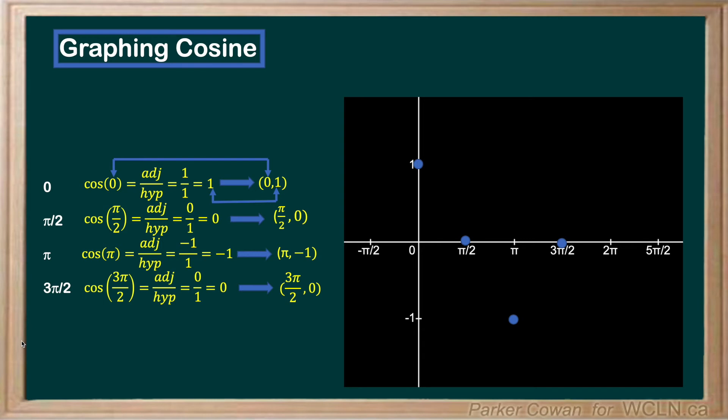However we're still missing our point for 2π. Using our knowledge of the unit circle, we can determine that cos(2π) is equal to cos of 0. Thus, completing the wave's repetition with a point at (2π, 1).